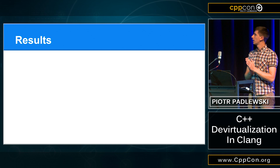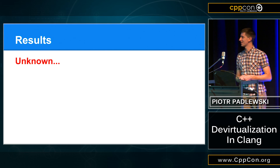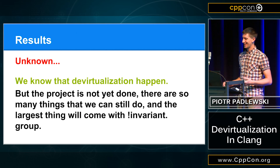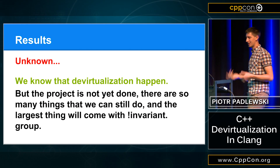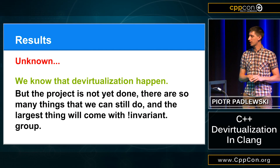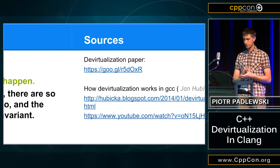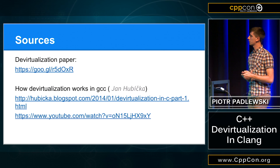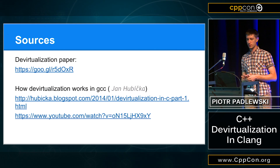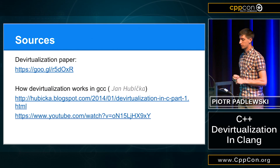So what are the results? Unfortunately, the results are unknown — not because I cannot tell you the numbers, but because I don't know them yet. The whole thing is still in development, and the invariant group optimization I was talking about is not yet done, which is the main point of the whole devirtualization effort. If you want to learn more about devirtualization in Clang, you can see my paper about it. And if you want to know how GCC deals with devirtualization, you should go to Jan Kubiczka.